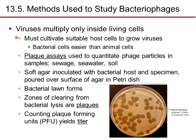Viruses multiply only inside living cells and require cultivation in suitable host cells. Bacterial cells are easier than animal cells because they have fewer defenses. Plaque assays are used to quantitate phage particles in samples like sewage, seawater, and soil. A soft agar mixture with the bacterial host is poured over the surface of an agar plate; bacteria form a lawn, and zones of clearing (plaques) form where bacterial lysis occurs. Plaques per unit yield the titer, expressed as PFU (plaque-forming units).